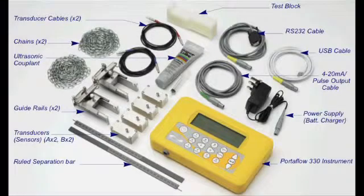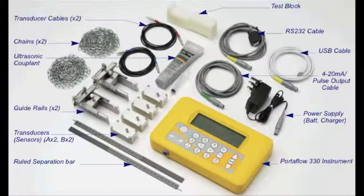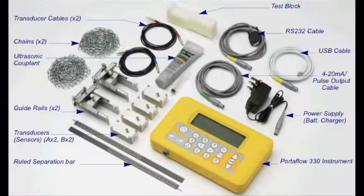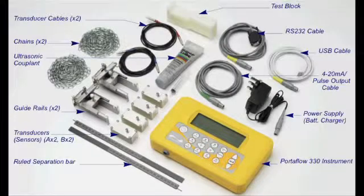Each Micronix portable flow meter has a dedicated case that contains the following: the Micronix flow meter, either one or two sets of sensors depending on the model, a set of guide rails, grease, a set of cables, chains to attach the guide rails, and a charger.